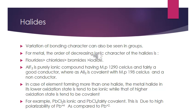We can also see the bonding character variation within groups. Looking at halides in decreasing ionic character: fluorides, then chlorides, then bromides, then iodides. AlF3 is a pure ionic compound with a melting point of 1290°C and is a good conductor. But AlI3 is covalent in nature with a melting point of 198°C and is a non-conductor. This is because fluorine is at the top of the group, and the ionic character decreases from top to bottom.